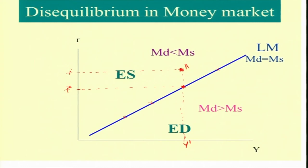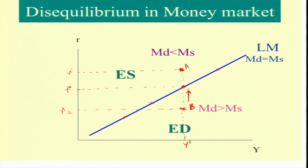Point A cannot be an equilibrium point. Now look at any point below this LM curve — for example, point B. Here the rate of interest is relatively low, so the opportunity cost of holding or demanding money is low. As a result, people will demand more money for transaction purposes. When people demand more money for transaction purposes, demand for bonds will come down, bond price will decrease, and the rate of interest will increase. So there will be an upward pressure on the rate of interest to increase.